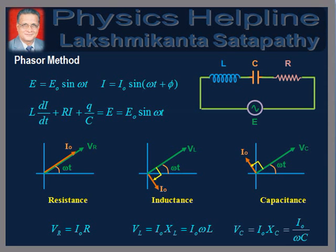Therefore, voltages across the inductor, the resistor, and the capacitor are L·dI/dt, RI, and q/C, respectively. Applying Kirchhoff's loop rule, we get L·dI/dt + RI + q/C = E0 sin(ωt).